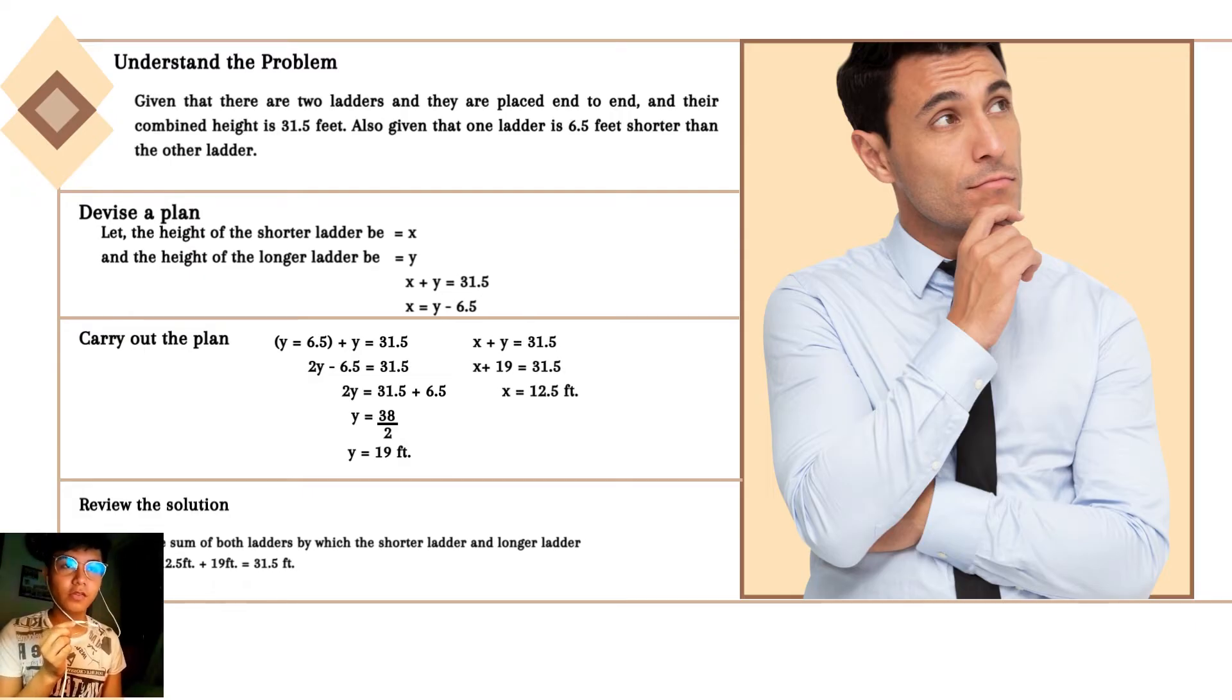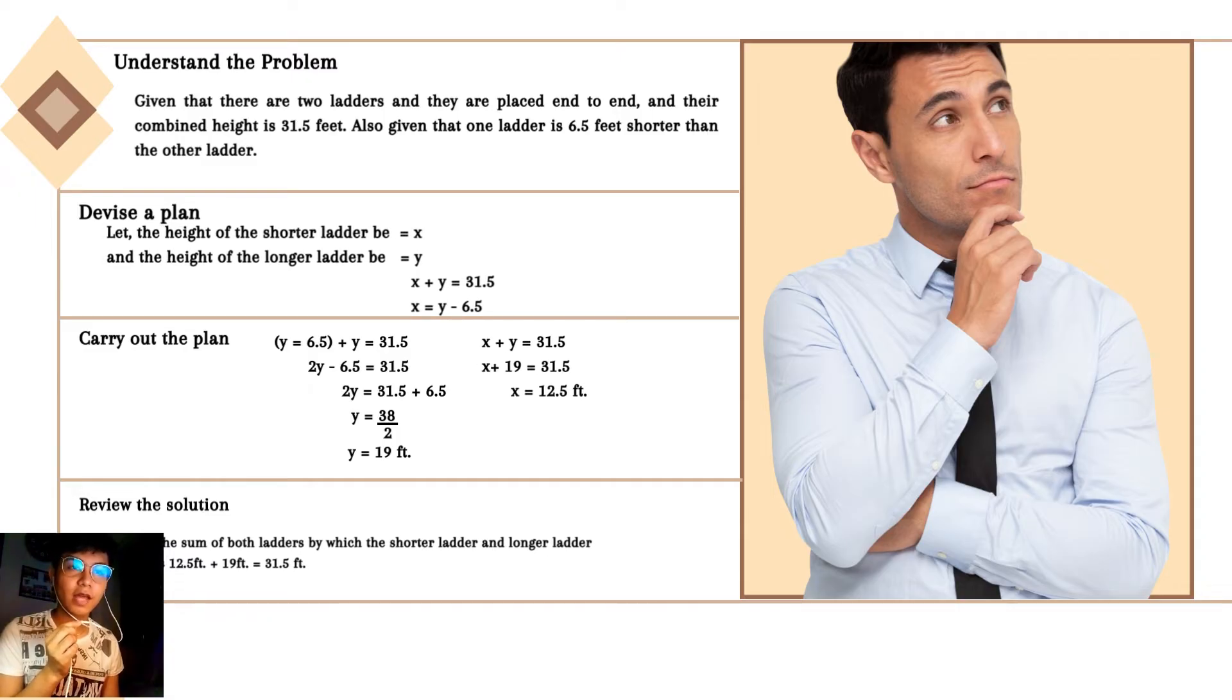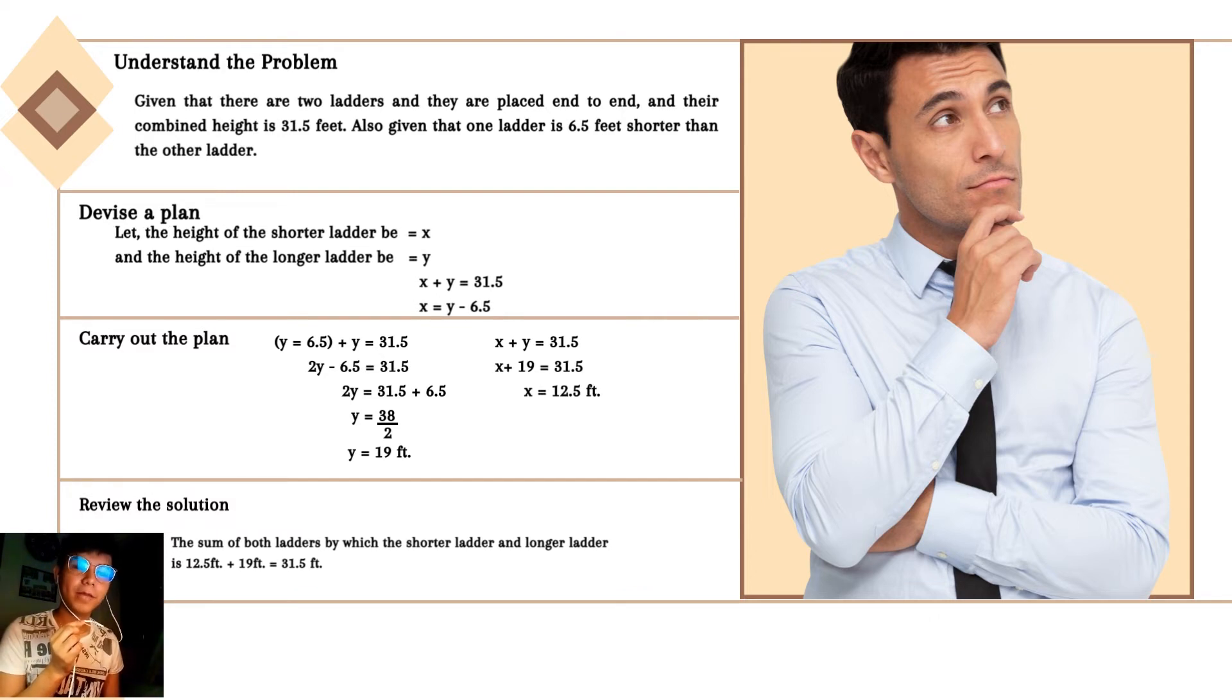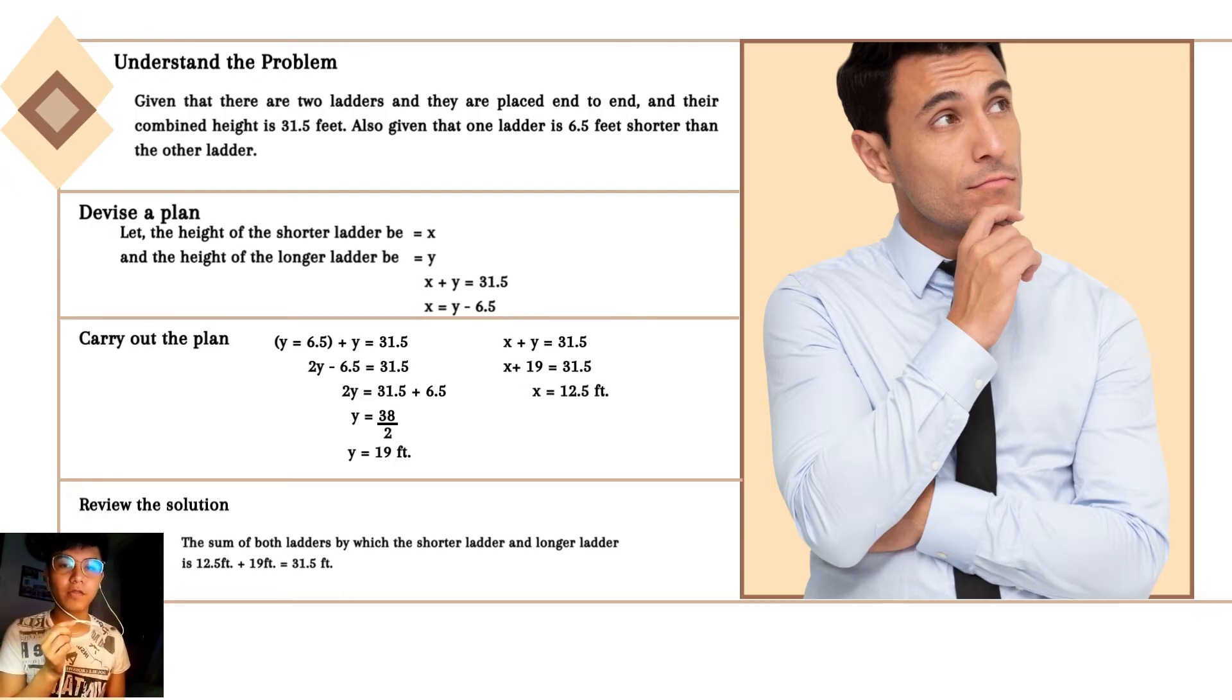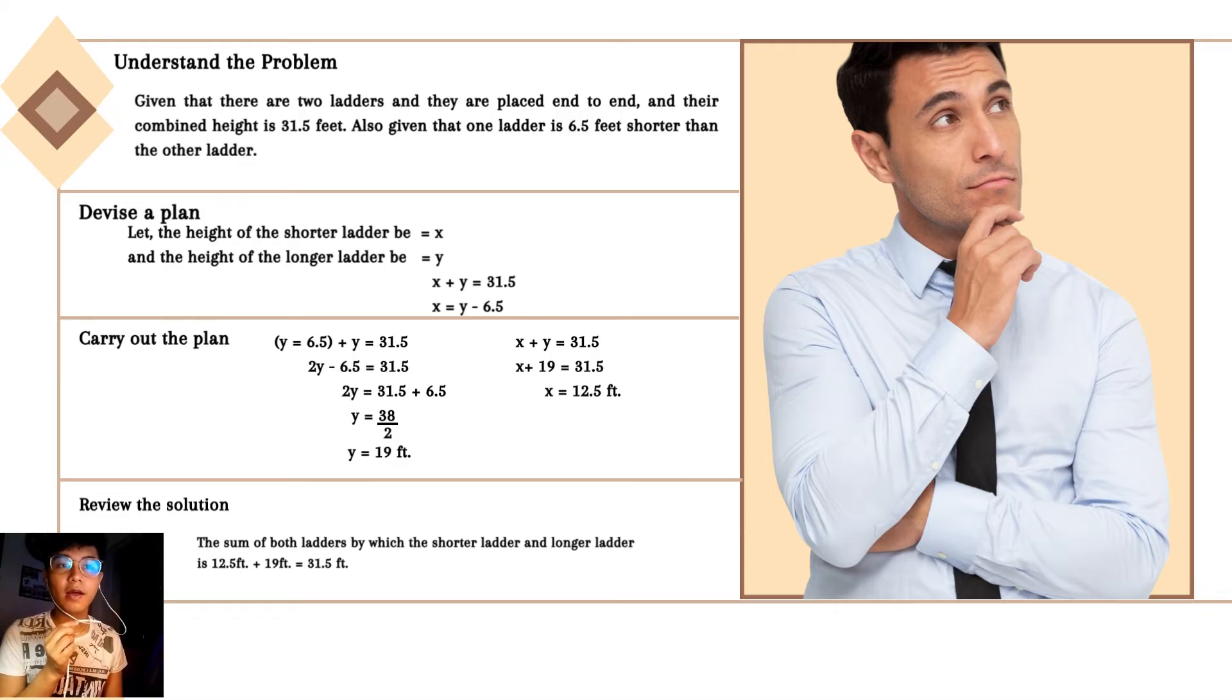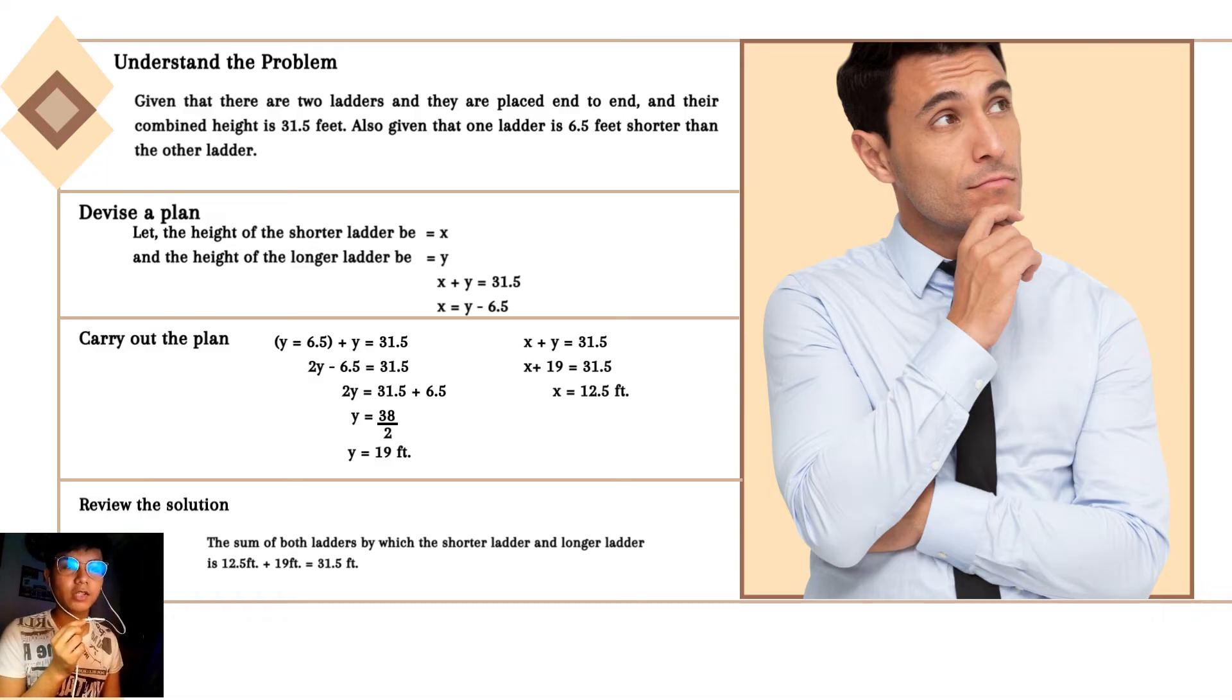Second method is to devise a plan. Let the height of the shorter ladder be equal to X and the height of the longer ladder be equal to Y. There are two main equations: X plus Y is equal to 31.5 and X is equal to Y minus 6.5. We'll carry out the plan for the third method.